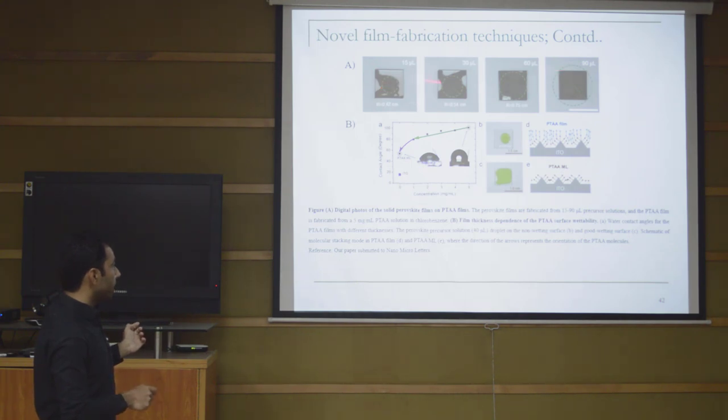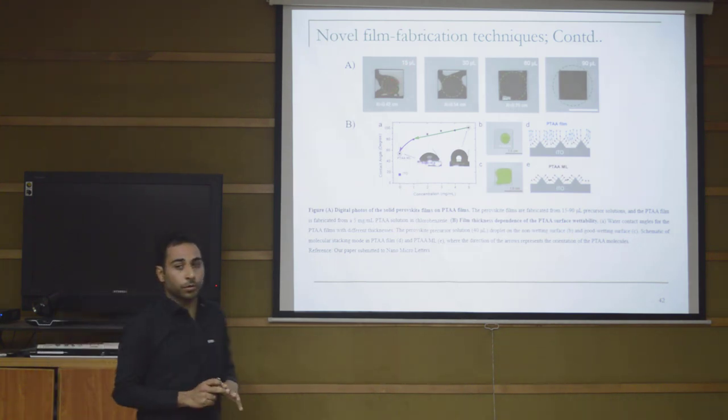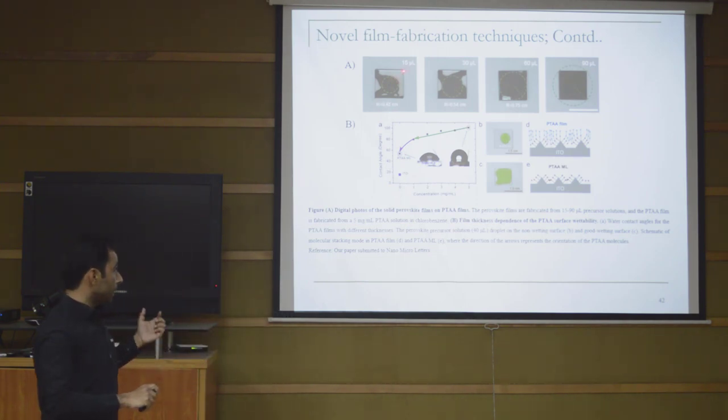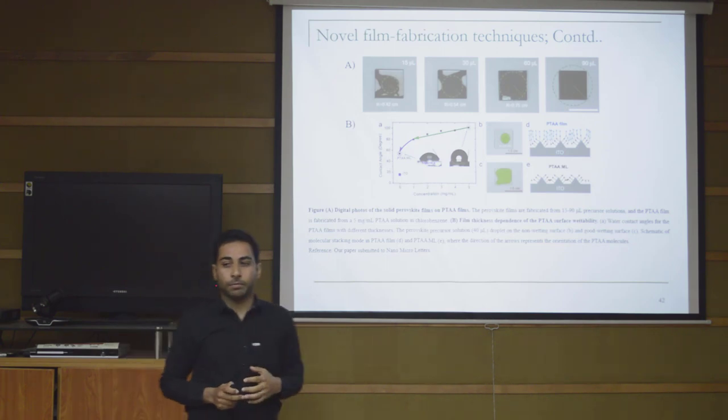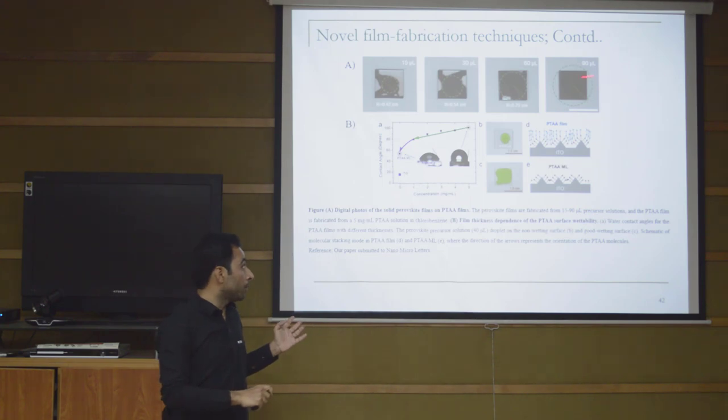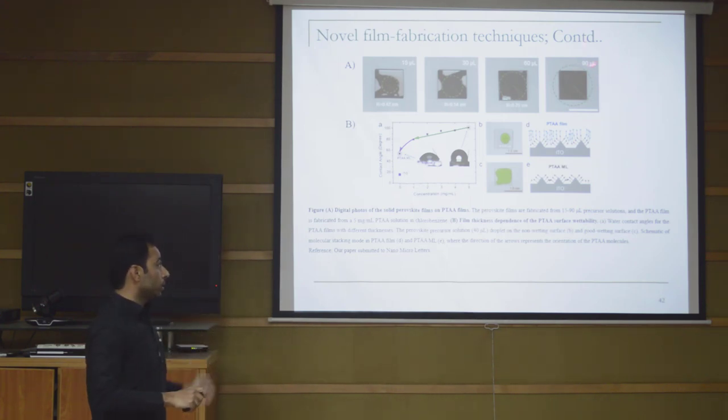If you look at figure A, when we put this much perovskite precursor on the substrate, it's not able to cover the whole substrate. During spinning, most of the solution flies away due to centrifugal force. If you increase the amount, you get full coverage, but the cost is you've consumed a lot of precursor solution—90 microliters—so most is wasted.